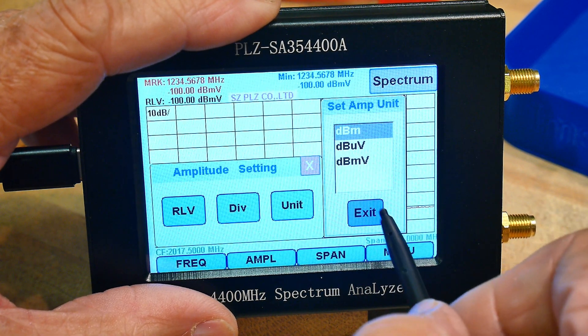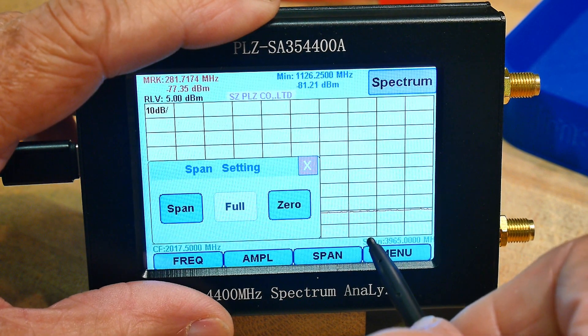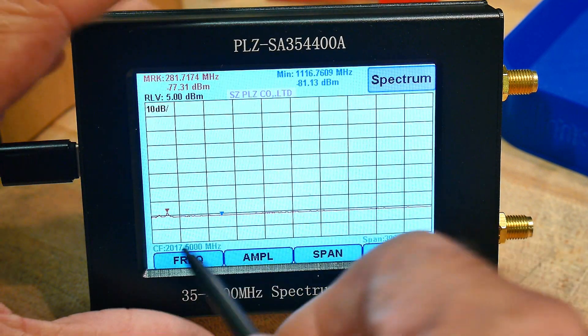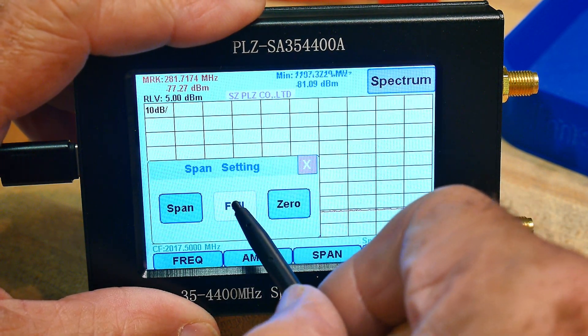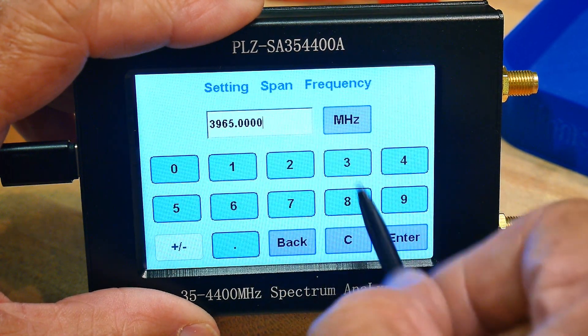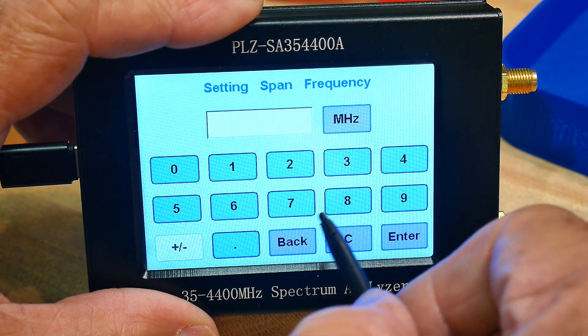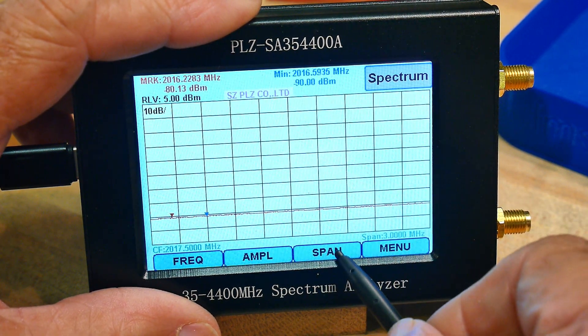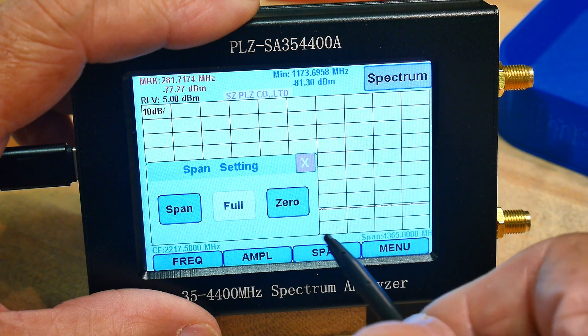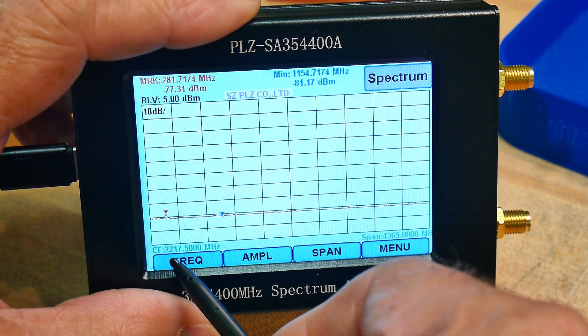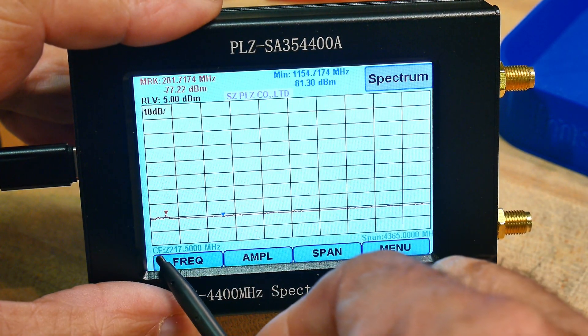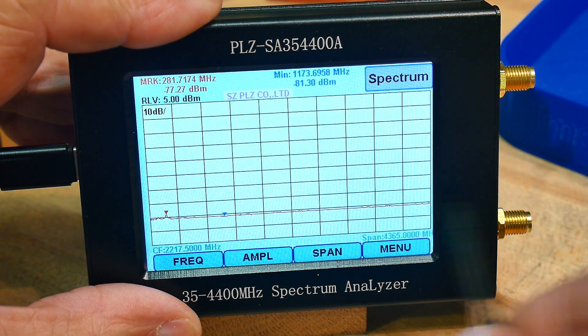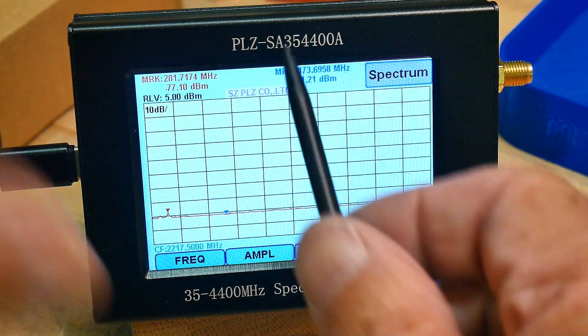So dBm is what we want. You can set the span. We'll do full span. When we exit it'll go from a center frequency of 2 gigahertz and it goes all the way up to 4.365 megahertz, so it's quite wide. It actually goes from 35 megahertz to 4.4 gigahertz.